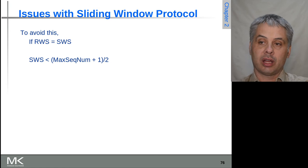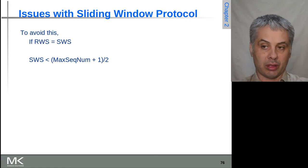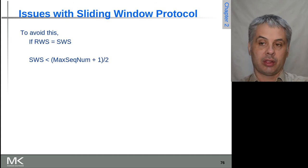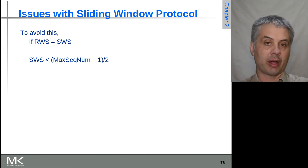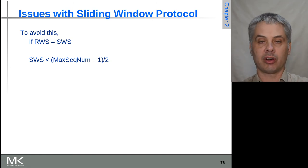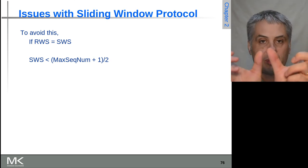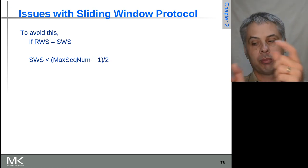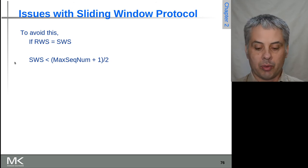The way to avoid this, if you're going to have the receive window size and the sending window size the same, is that the sliding window size has to be less than half of the maximum sequence number. That way you know which half of the range you're in at any point in time, and the old and new frames occupy separate halves, so they can be reliably disambiguated.